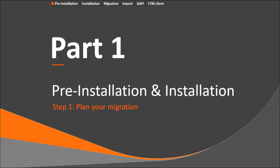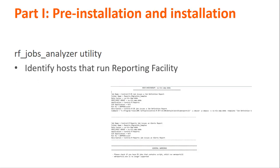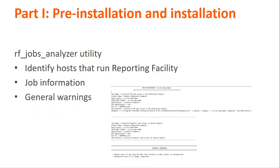Before installing version 9.18, we need to plan the migration by using the RF Jobs Analyzer utility, which comes with the installation CD. The utility generates a report containing the following information: identification of hosts that run reporting facility, detailed information about each job that runs these reports which will need to be updated, and general warnings about the migration process.